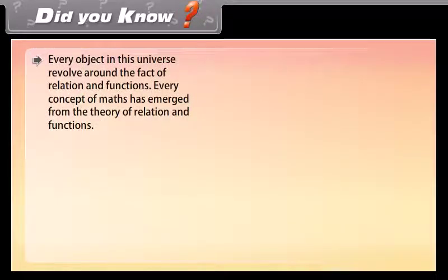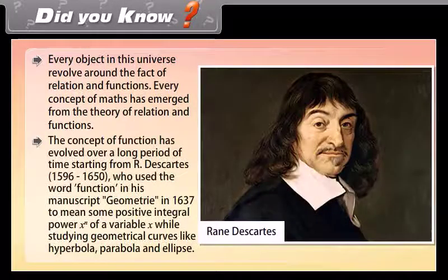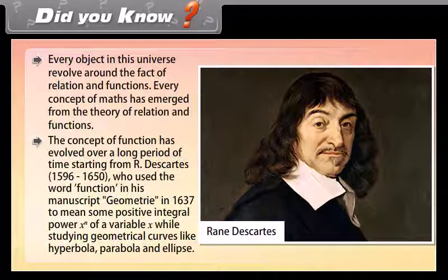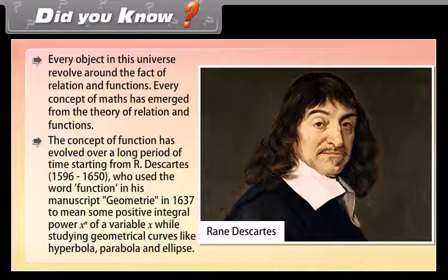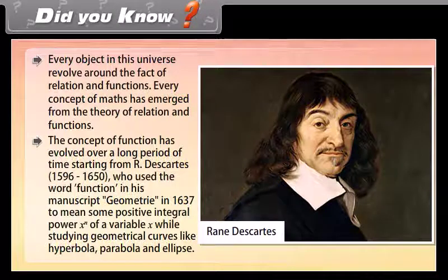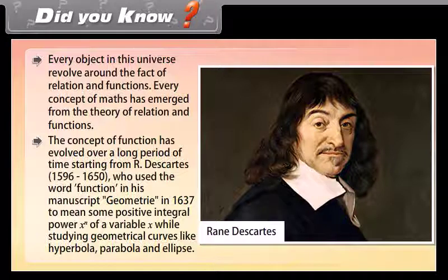Did you know? Every object in this universe revolves around the fact of relation and functions. Every concept of math has emerged from the theory of relation and functions. The concept of function has evolved over a long period of time, starting from R. Descartes (1596–1650), who used the word function in his manuscript Geometry in 1637 to mean some positive integral power x^n of a variable x while studying geometrical curves like hyperbola, parabola and ellipse.